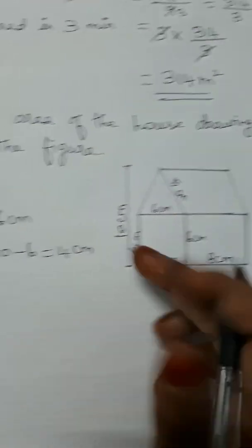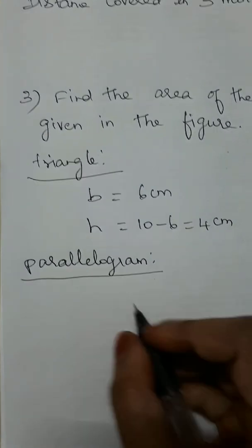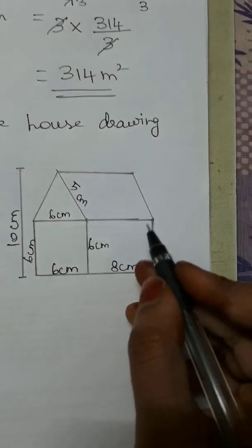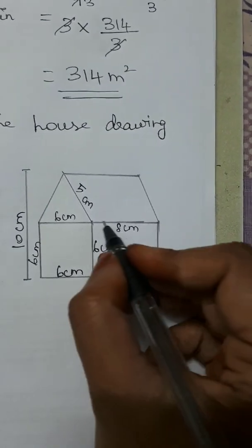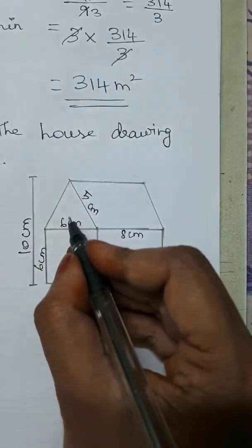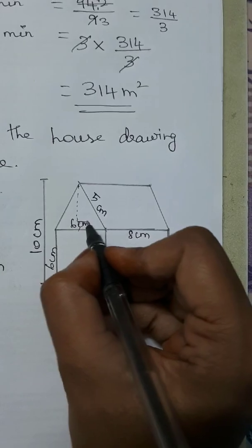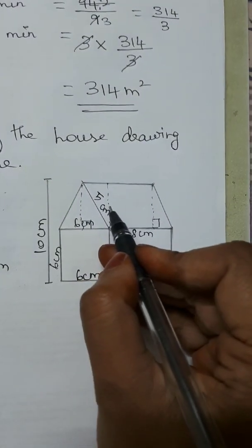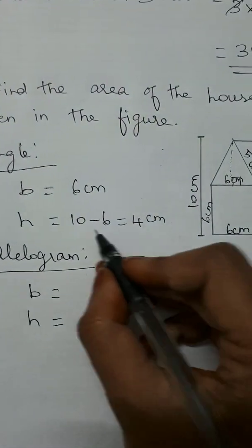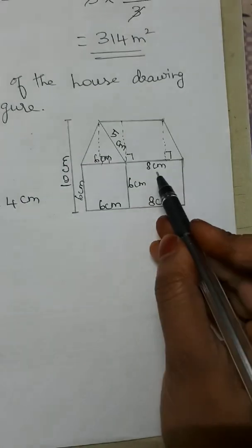The square has all 4 sides equal — the side is 6 cm. The parallelogram has a base of 8 cm. The height of the parallelogram is a perpendicular line dropped from the vertex. The height equals 10 − 6 = 4 cm. So the parallelogram height is 4 cm and base is 8 cm.